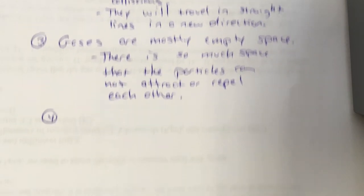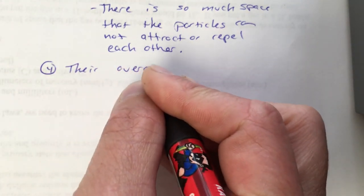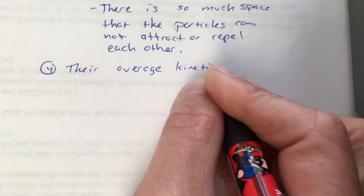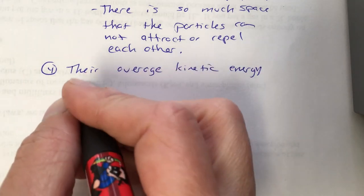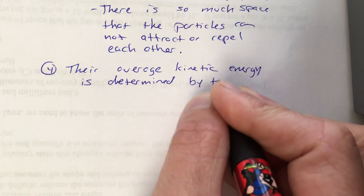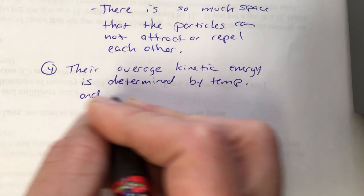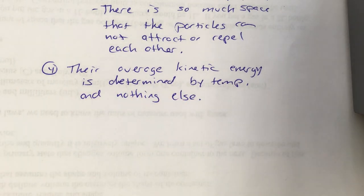The last thing we can say about a gas is their average kinetic energy is just a measurement, an idea of how fast these particles are going, if they're moving fast or if they're moving slow. This average kinetic energy, how fast or slow they're moving, is determined by temperature and nothing else. So the number of particles that are in there won't affect it. The pressure they're under doesn't affect it.